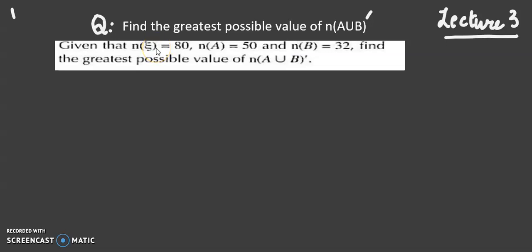My dear students, today we will solve a question regarding Venn diagrams. In this question we will find what is the greatest possible value of the number of elements in the complement of A union B.